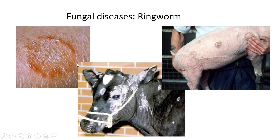The ring formation is especially what it looks like on the human skin, but again it's not caused by a worm — it's caused by a fungus. We see this ring formation and the skin itself looks very flaky and it starts to peel off.